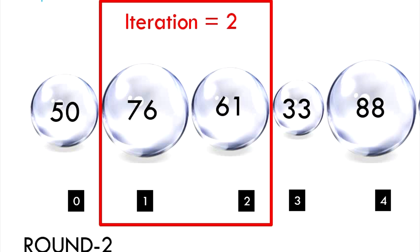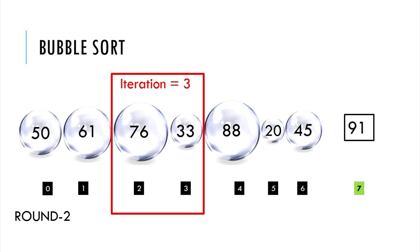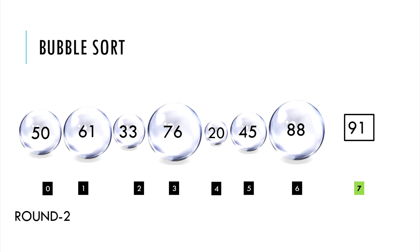Round 2, iteration 2. Swapping is necessary and so it's done. Round 2, iteration 3. Swapping is done. In this fashion, at the end of round 2, the largest bubble is again moved towards the top. The bubble pops.